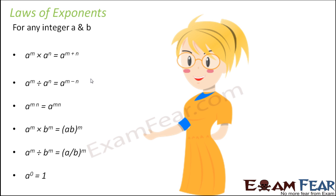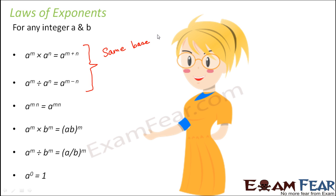So when you look at these on this screen, it might seem very complex and tough. But as we discuss each of these in detail, you will see that they are extremely simple. Now when you look at the first two laws, did you notice something? In the first two laws, the base remains the same. That means both numbers which are getting multiplied have the same base a, but they have different exponents — that is the powers are different, which is m and n. So these first two scenarios deal with powers of same base.